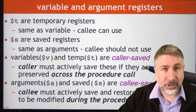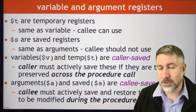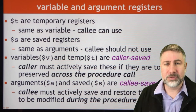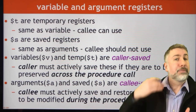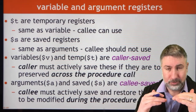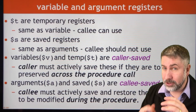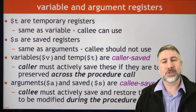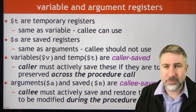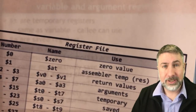Variables and temporaries are what we call caller-saved. If you have a value in a V register or T register and you're going to call a subroutine, then if you want that value to be preserved it's your responsibility to save it before you call the subroutine. A and S registers are callee-saved. If you are in a subroutine and you want to modify an A register or an S register, it's your responsibility inside the subroutine to save it before you modify it and restore it before you return. The onus of preservation is either on the caller for V and T, or on the callee for A and S.